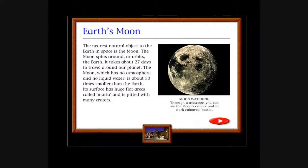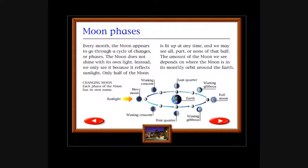Latest news: Moon discovery. Oh look, there's earth. We're on the moon now. Cool. Earth's moon: The nearest natural object to the earth in space is the moon. The moon spins around, orbits the earth. It takes about 27 days to travel around our planet. The moon, which has no atmosphere and no liquid water, is about 50 times smaller than the earth. Its surface has huge flat areas called maria and is pitted with many craters. Moon watching: Through a telescope you can see the moon's craters and its dark areas called maria. Maria is watching us. Great. Moon phases: Every month the moon appears to go through a cycle of changes or phases. The moon does not shine with its own light. Instead we only see it because it reflects sunlight. Only half of the moon is lit up at any time and we may see all, part, or none of that half. The amount of the moon we see depends on where the moon is in its monthly orbit around the earth.